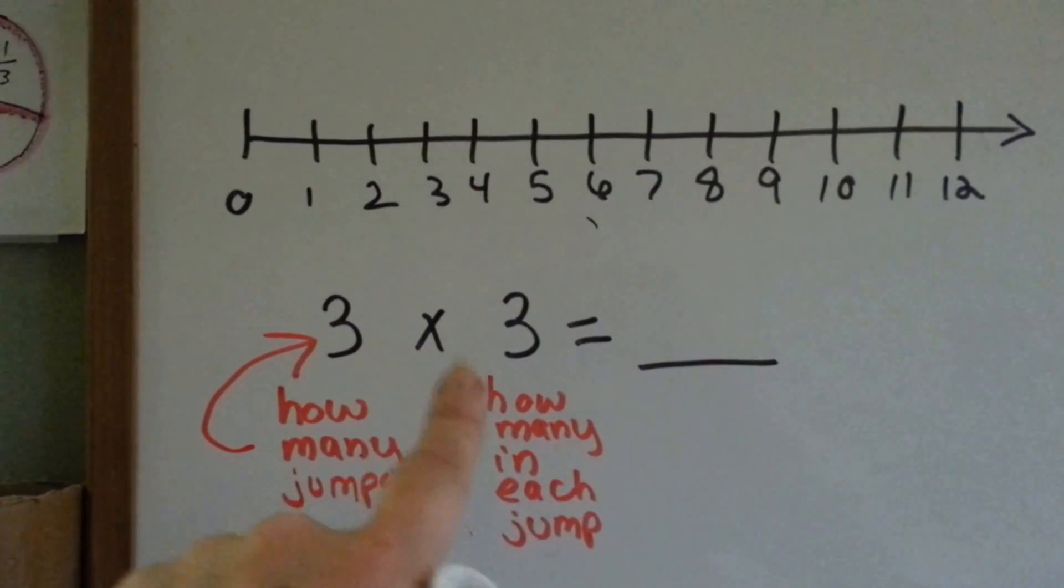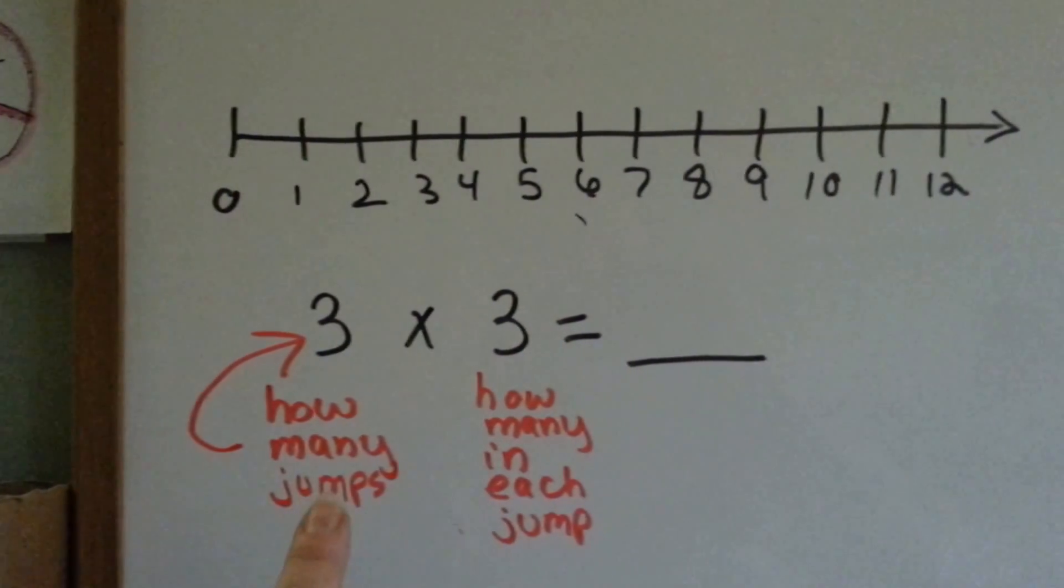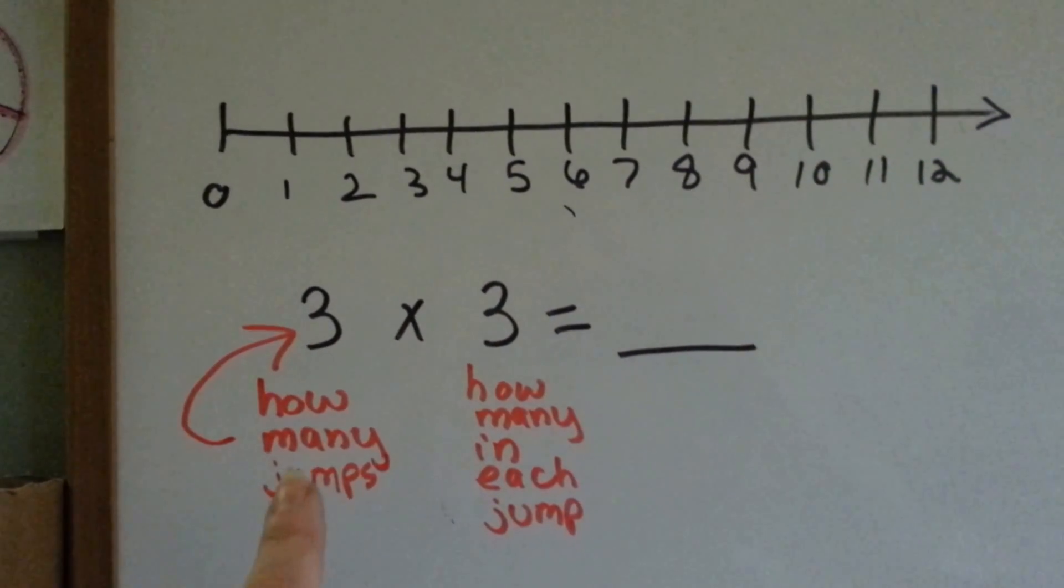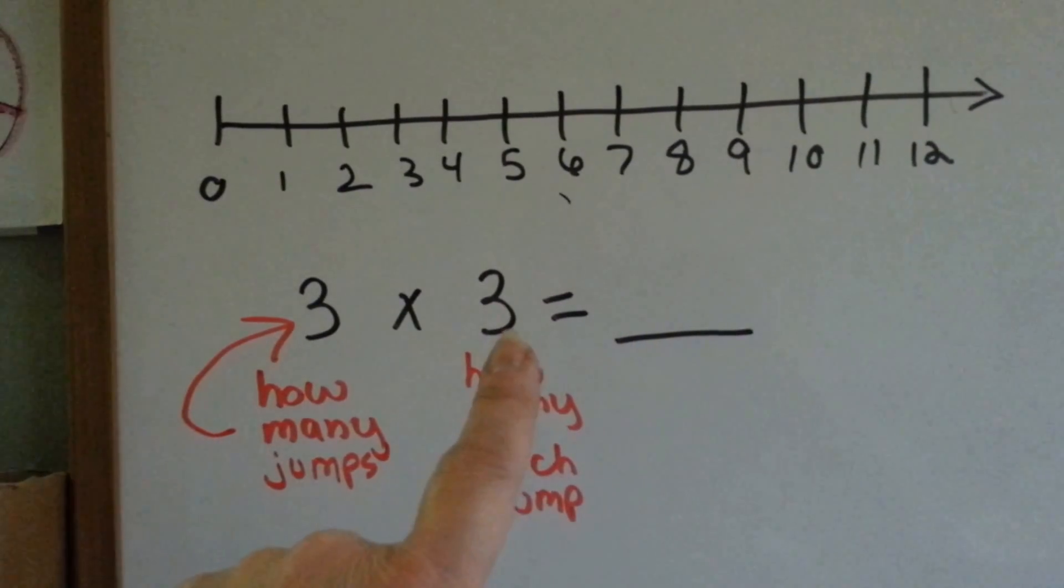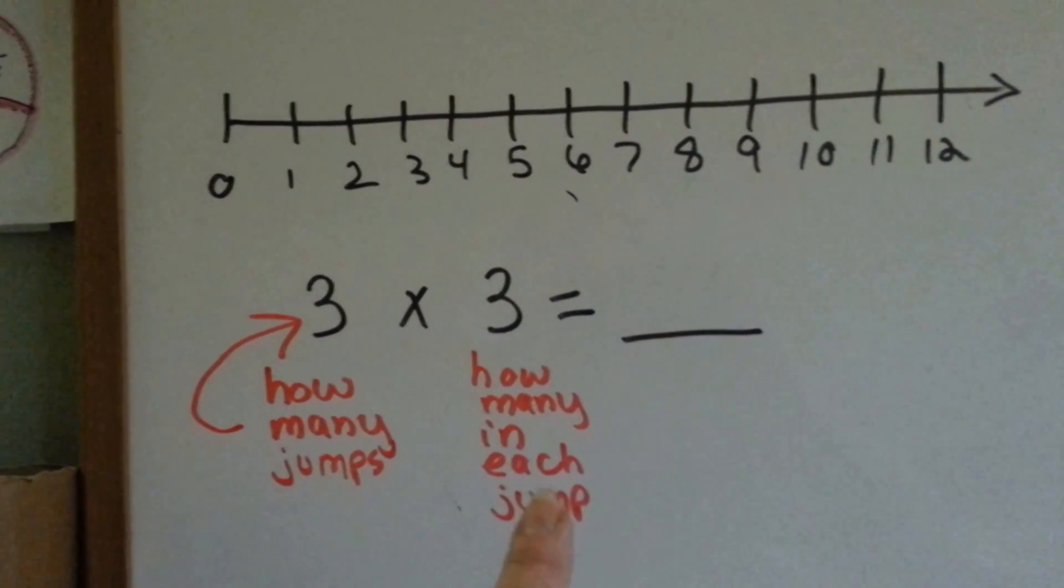When we see 3 times 3, the 3 tells you how many jumps you're going to make, and this one on this side tells you how many are in each jump.